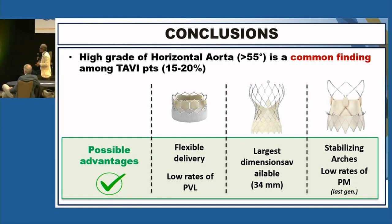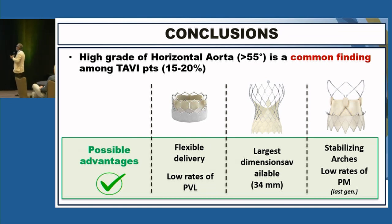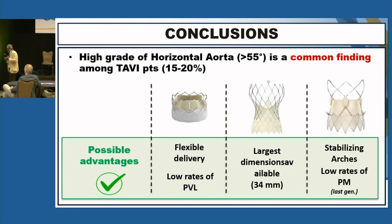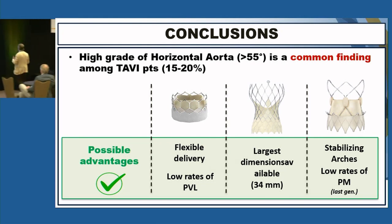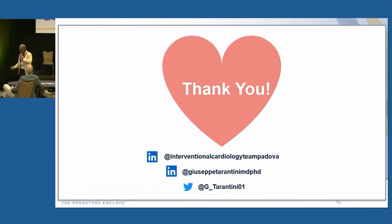In conclusion: horizontal aorta is a common finding. There is not a class effect among the different THV. The Sapien is more flexible and permits low rates of PVL. When you go with the CoreValve family, especially the larger sizes, you need to use that valve when you have very large annuli. Finally, the Acurate NEO may facilitate your life sometimes because you have the stabilization arch and a lower pacemaker rate. Thank you for your attention.